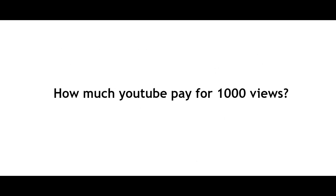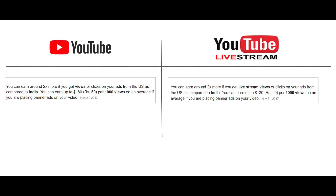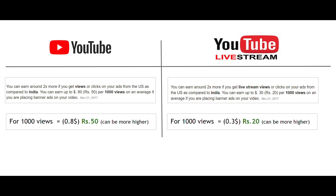Let's check how much YouTube pays for 1k views in India. When compared to foreign countries, YouTube pays less for 1k views in India compared to countries like the US, Australia, etc. In this video we are going to calculate the minimum possible amount so that we can get an accurate figure. The minimum amount for 1k views in India for a normal video is 0.8 dollars, which is equal to 50 rupees. And for a live stream video, 1k views earns 0.3 dollars, which is equal to 20 rupees. These can be very high, but this is the minimum amount.